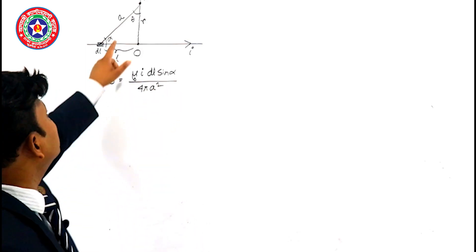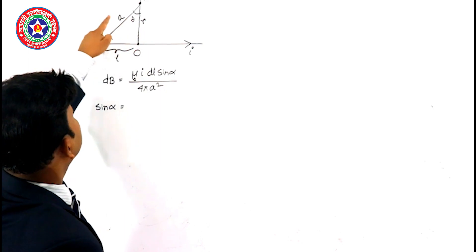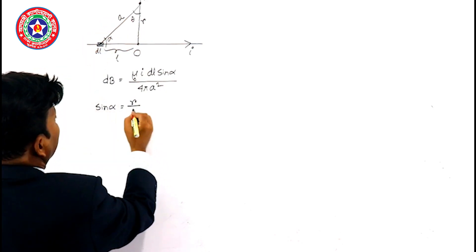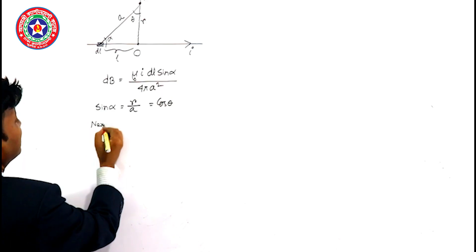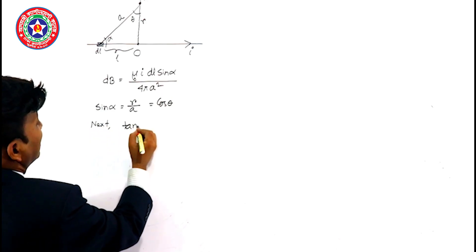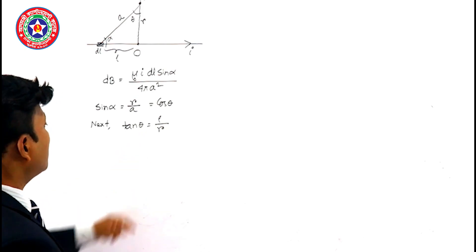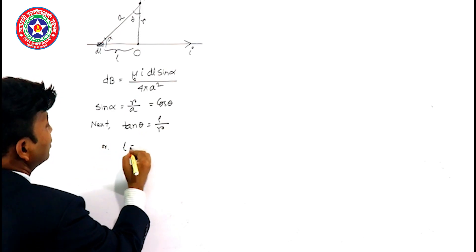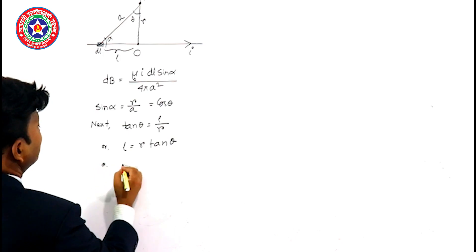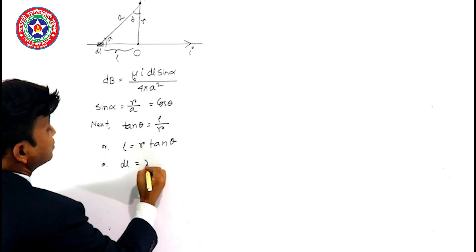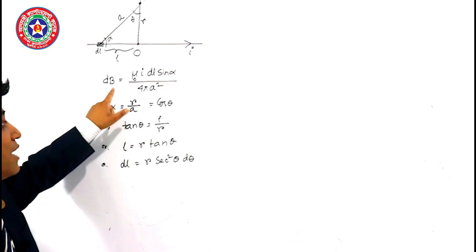From this triangle we can write sine alpha equals perpendicular by hypotenuse, that is R by A, which is also equal to cos theta. Next, from this triangle we can write tan theta equals perpendicular by base, that is L by R. From this we can write L equals R tan theta. If we differentiate this, we get DL equals R sec squared theta d theta.